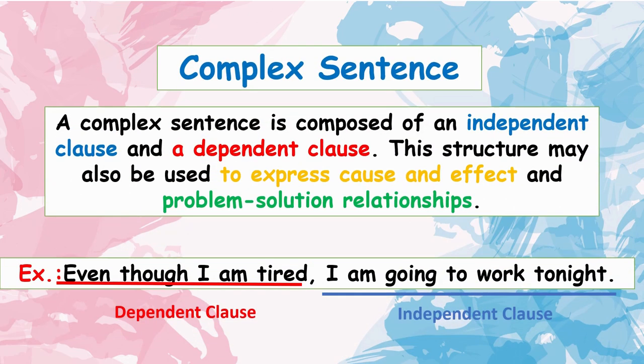Now, let us learn complex sentences. What is a complex sentence? A complex sentence is composed of an independent clause and a dependent clause. This structure may also be used to express cause and effect and problem-solution relationships. For example: 'Even though I am tired, I am going to work tonight.' The independent clause is 'I am going to work tonight,' and the dependent clause is 'even though I am tired.' It is introduced by a subordinating conjunction, 'even though.'